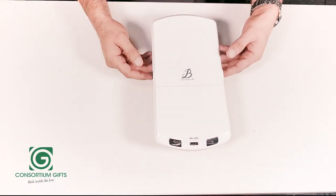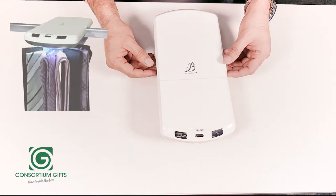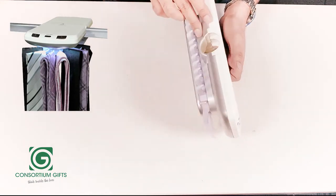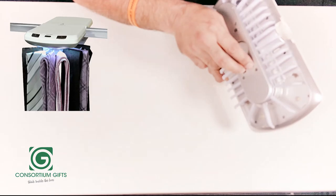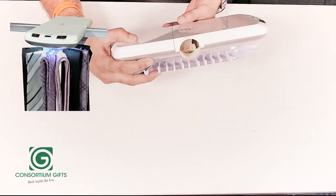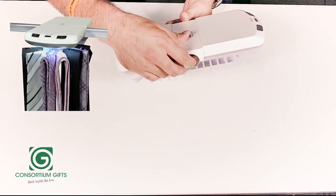Consortium Gifts presents another great product, the Boardroom Tie Rack. This amazing product can hang 30 ties and includes two belt loops. This particular unit goes inside your cupboard.